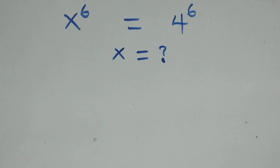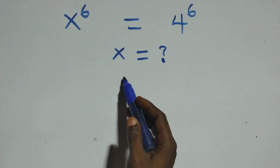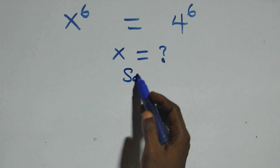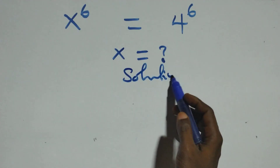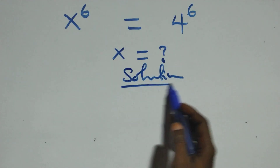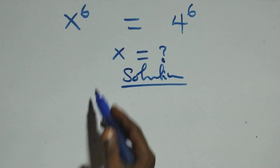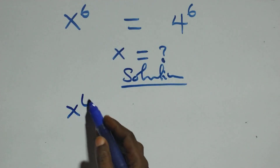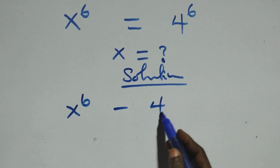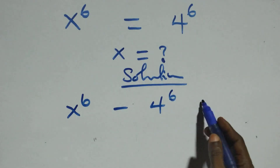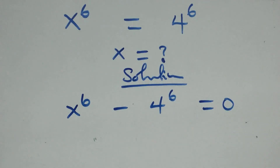Hello, you are welcome. How to solve this nice exponential equation. What we have here: we take 4 raised to the power 6 to the left hand side and we have x raised to the power 6 minus 4 raised to the power 6 equals to 0.